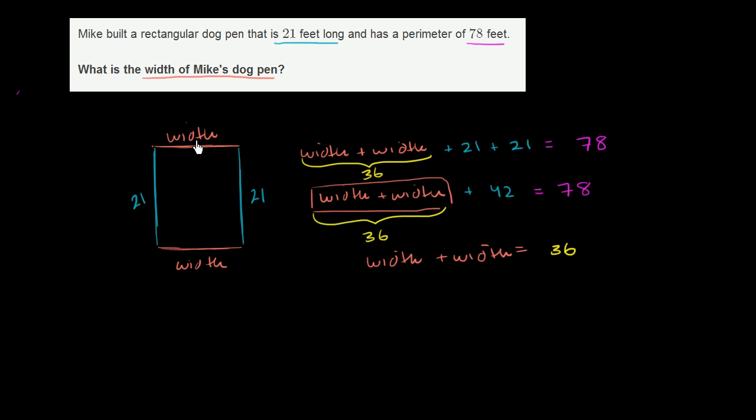So we need to figure out a width so that if I add the width to itself, I get 36. Because then you add those two, you get 36. Plus 21 plus 21 is equal to 78.